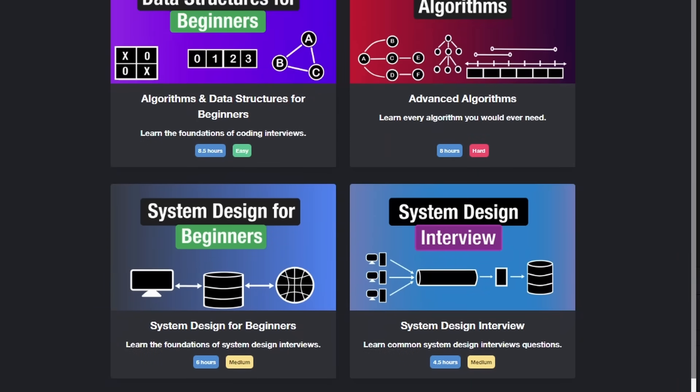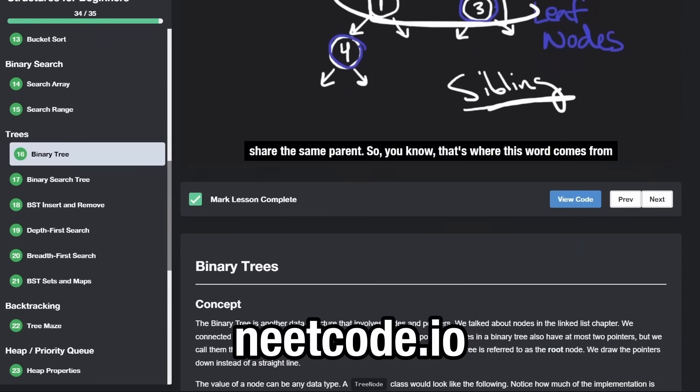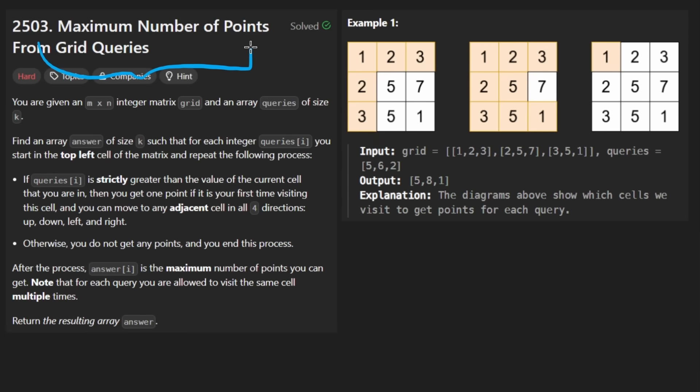Hey everyone, welcome back and let's write some more neat code today. So today let's solve the problem, maximum number of points from grid queries. It's definitely a hard problem, but I don't think it's crazy difficult for many hard problems at least. Not saying it's easy at all, but let's get into it.